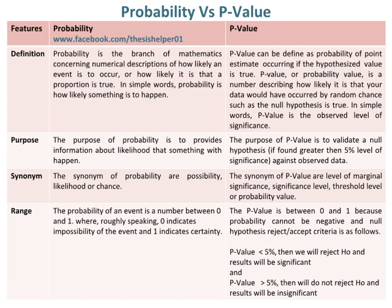The probability of an event is a number between 0 and 1, where roughly speaking, 0 indicates impossibility of the event and 1 indicates certainty.